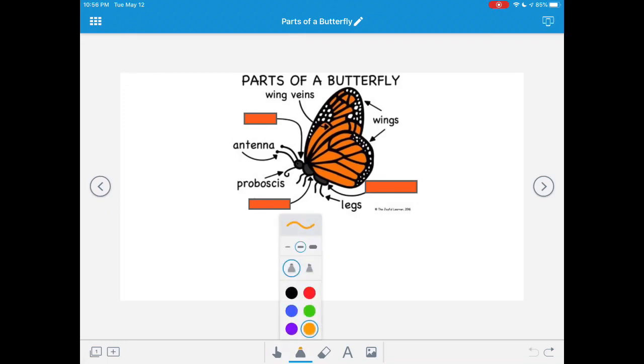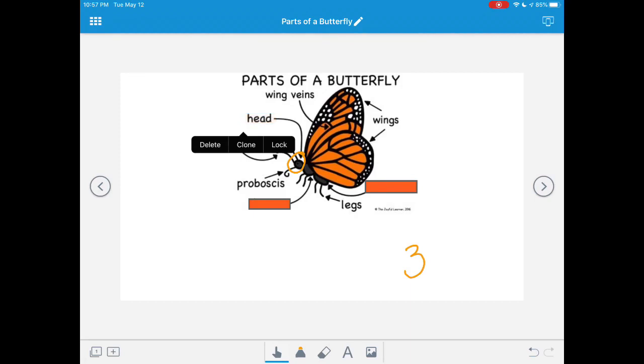Now, the three remaining parts we haven't named yet are the three segments of the butterfly's body. I bet you know the first one. What is the first segment called? That's the head. Good job.